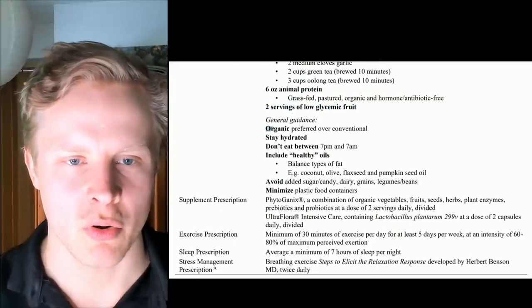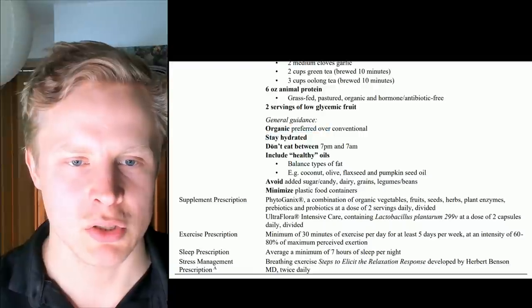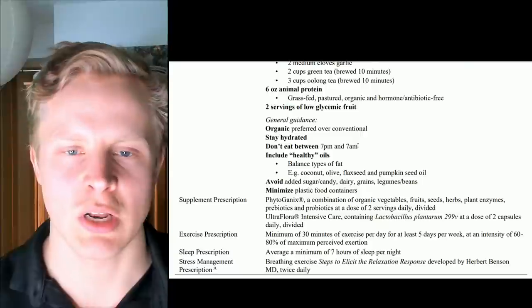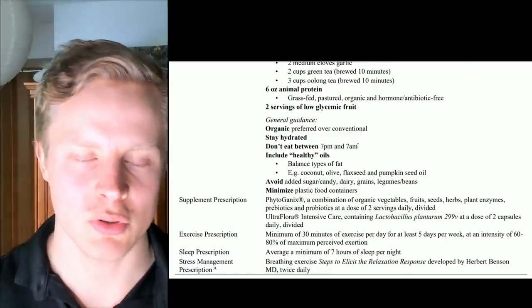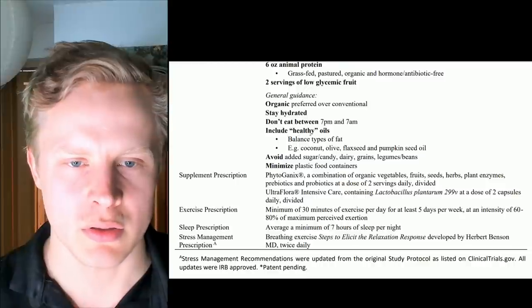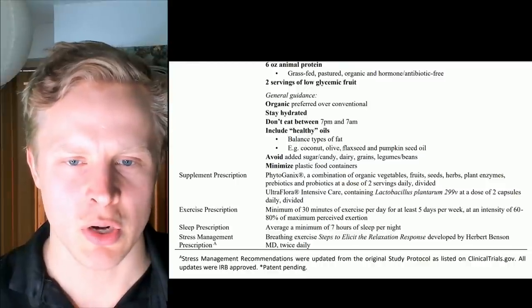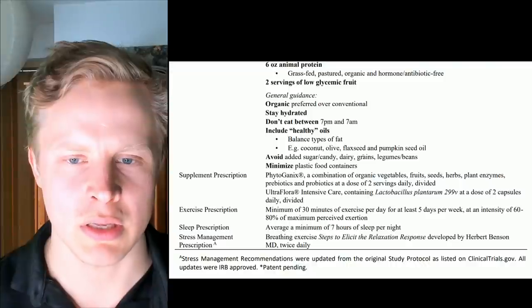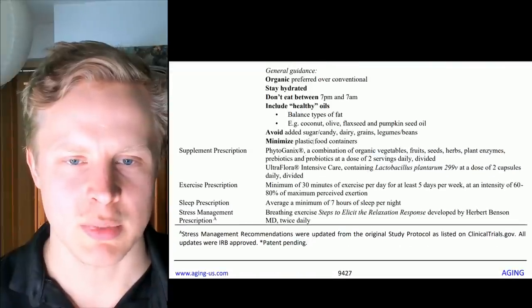So the general guidance was to prefer organic, stay hydrated, don't eat between 7 p.m. and 7 a.m., so do some time-restricted eating. It wasn't complete intermittent fasting, but it was 12 hours of fasting and 12 hours of eating. And include some healthy oils, coconut oil, flaxseed, and pumpkin seed oil. Avoid sugar, candy, dairy, grains, legumes, beans. Minimize plastic food containers.